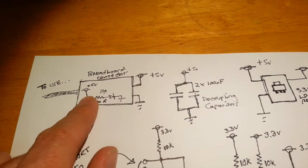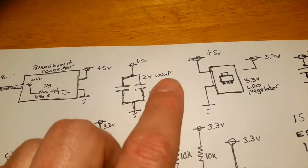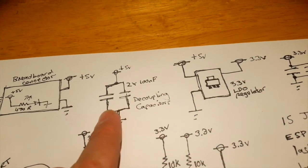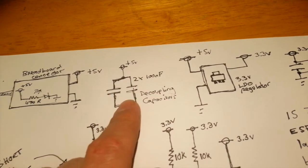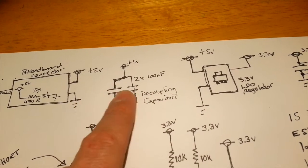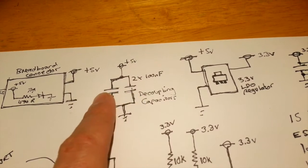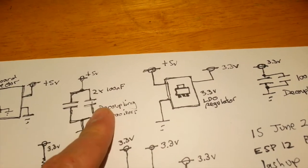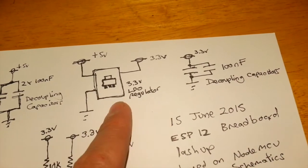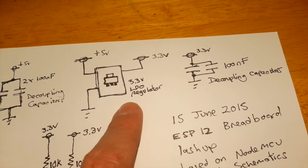But basically LED lights up when power is applied to the USB port. Always handy to have a simple indication like that. Moving along we've got a couple of decoupling capacitors here on the 5V rail. Just to smooth out any fluctuations in the voltage coming off the USB here. Always good practice to have some decoupling.